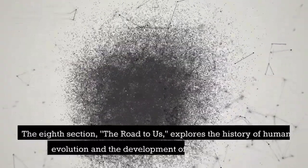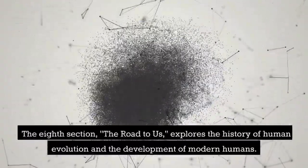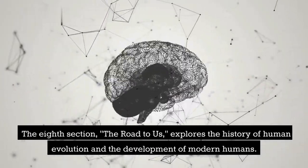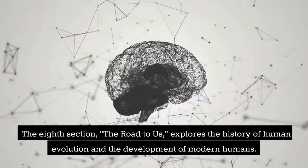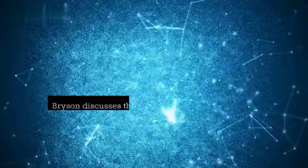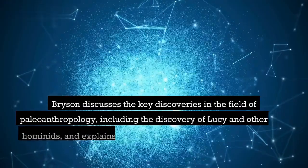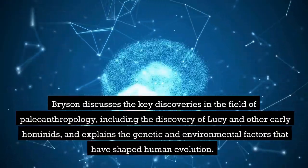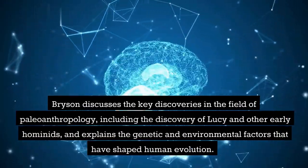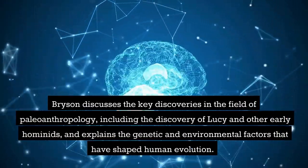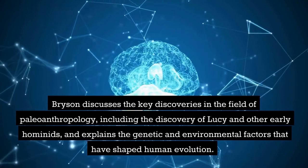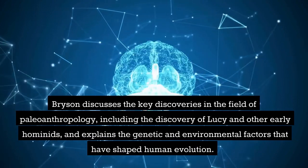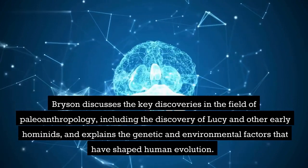The eighth section, The Road to Us, explores the history of human evolution and the development of modern humans. Bryson discusses the key discoveries in the field of paleoanthropology, including the discovery of Lucy and other early hominids, and explains the genetic and environmental factors that have shaped human evolution.